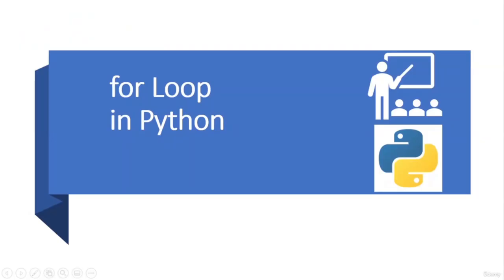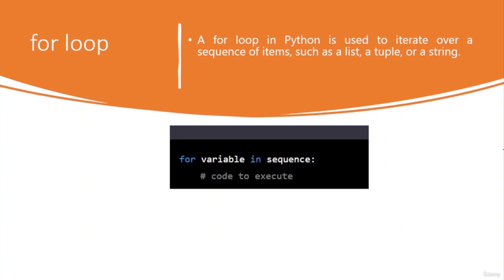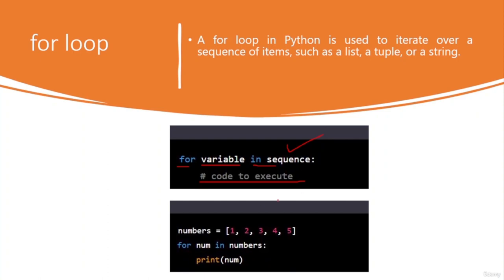For loops are like a buffet line at a party — you know exactly how many dishes there are, you go through the line one dish at a time until you reach the end. A for loop in Python is used to iterate over a sequence of items such as a list, tuple, dictionary, or string. The basic syntax is: 'for variable in sequence: [code to execute]'. For example, given a list of numbers, you iterate using 'for num in numbers: print(num)' to print each number.